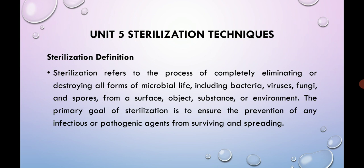Now we will discuss in detail about unit five, that is sterilization techniques. Sterilization is the process of completely removing any forms of microorganisms present on an object. Simply put, sterilization means removing any forms of living organisms or biota — biological organisms — present on any surface of an object. The object might be a human, animal, or plant tissue.